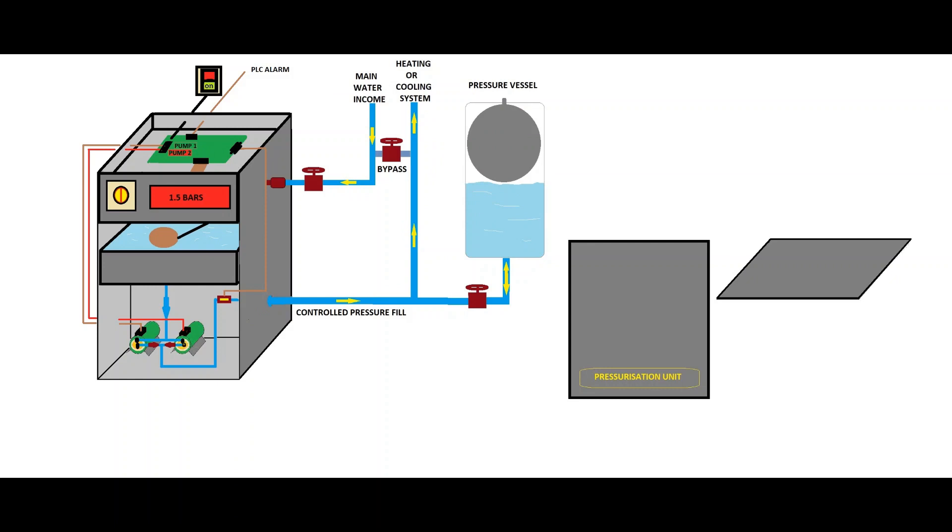The pressurization unit's PC board control will alternate both pumps because it wants to use them equally. So the system runs beautifully. Anytime if there is a pressure demand, the pressurization unit will provide water into the system with a specific pressure.